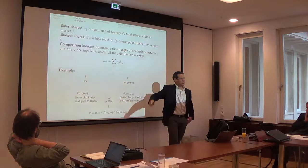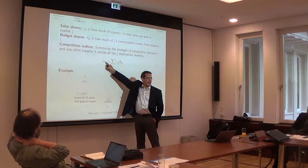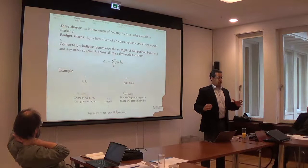So we have this term omega that is basically the product of how much of the US sales go to Japan and how much of the Japanese total consumption comes from Argentina. When we sum over all the markets, so Japan, Korea, the US itself, etc., we get a measure of the competition between countries i and k. So in this case the US and Brazil.